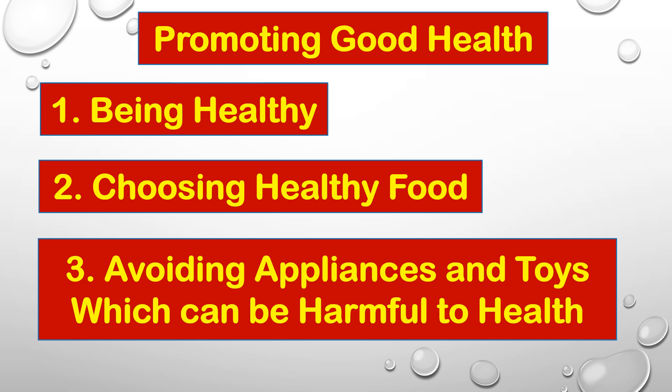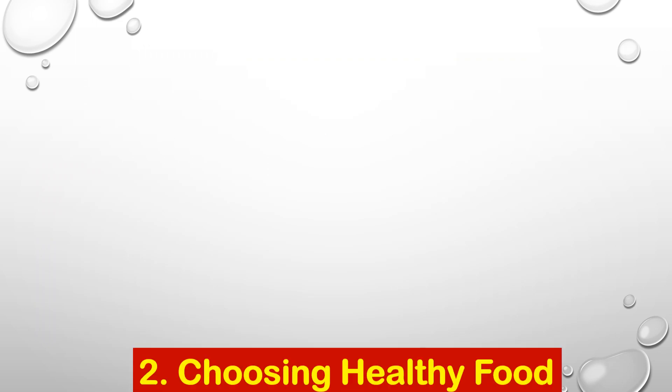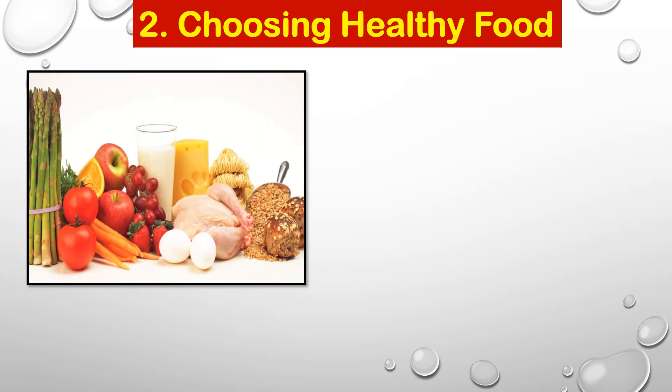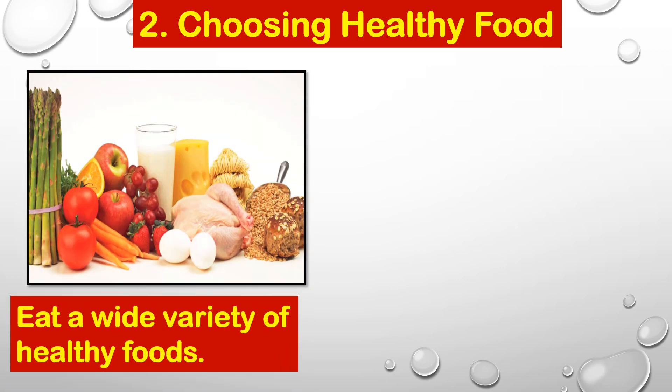Avoiding appliances and toys which can be harmful to health. To promote good health, you need to choose healthy foods. What are these healthy foods? You need to eat a wide variety of healthy foods. For example, fruits like apples, grapes, oranges, strawberries and many more. We also have vegetables like asparagus, broccoli, eggplants. We also have eggs, meats, and don't forget to drink milk.